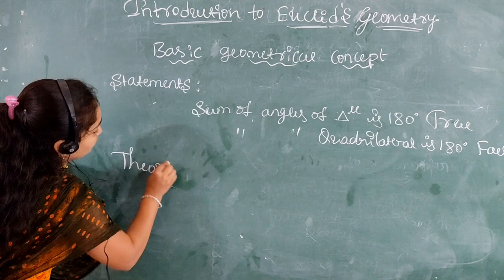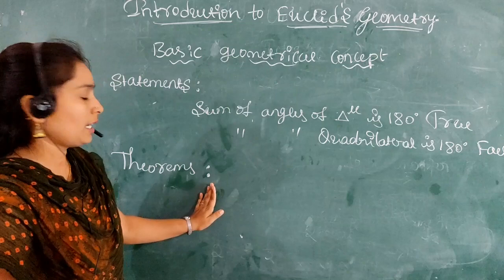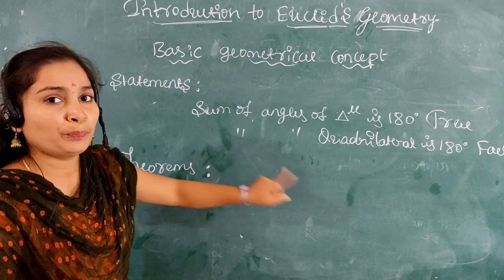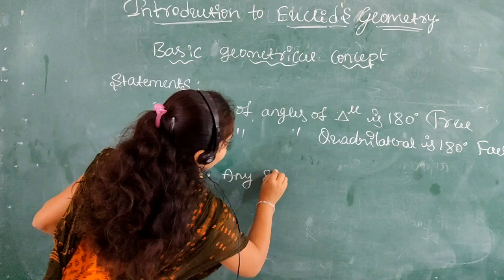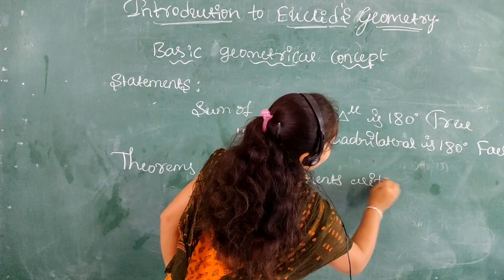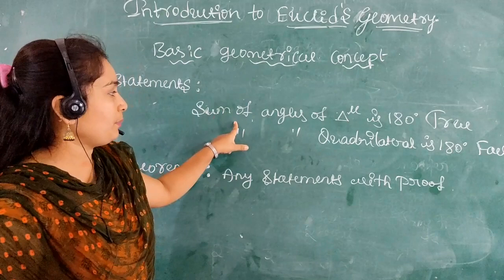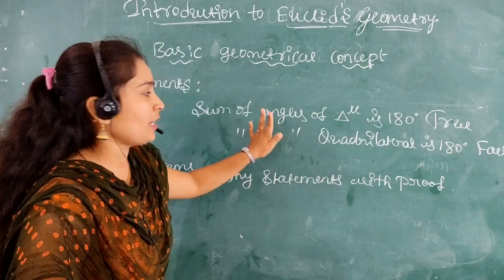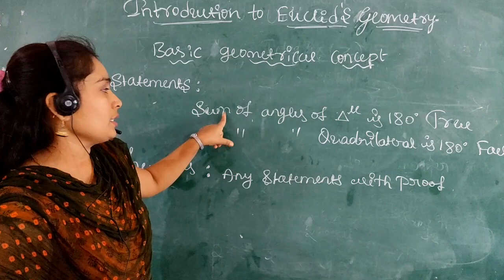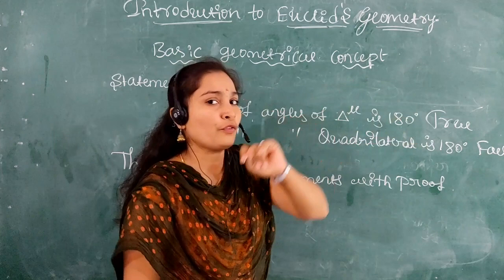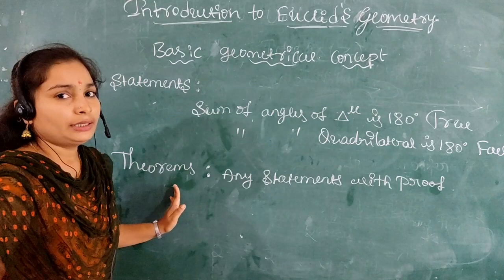Next, theorems. A theorem is any statement with proof. For example, the sum of angles of a triangle is 180 degrees — you have this statement and also a proof for it. Any statement that has a proof is called a theorem.